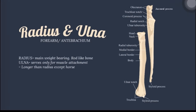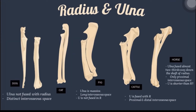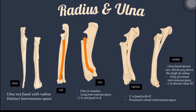The radius and ulna, also called the forearm or antebrachium. The radius is the main weight-bearing, rod-like bone. While the ulna serves only for muscle attachment. The ulna is always longer than the radius, except in horse. In dog, cats, and pig, the ulna is not fused with the radius, and there is a distinct interosseous space present.